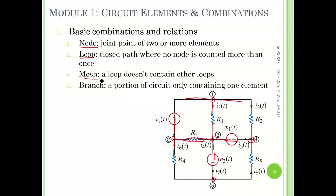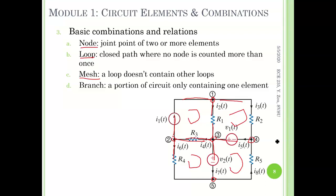Before that, let's talk about another concept: mesh. Mesh means one loop that doesn't contain other loops, so this is easier to count. How many meshes can we tell? This is one mesh, two mesh, three mesh, four mesh — just four meshes. Each one of them doesn't contain any other loop or mesh.